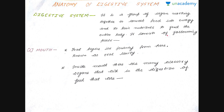So to begin with, what actually is the digestive system? The digestive system is a group of organs which work together to convert food into energy and basic nutrients in order to feed the entire body. It consists of the following parts.